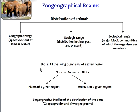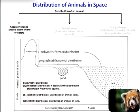Biota refers to all the living organisms of a given region. Biota consists of flora and fauna together — flora are the plants of a given region and fauna are the animals of a given region. Together they constitute biota. Biogeography is the study of the distribution of biota, which includes both zoogeography and phytogeography.